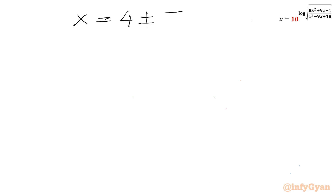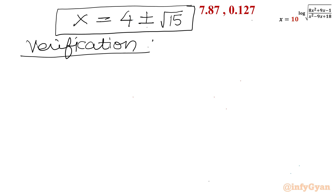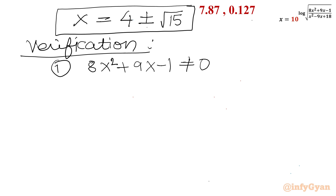The solutions to verify are x = 4 ± √15. Condition 1: the numerator 8x² + 9x − 1 should not equal zero. Solving it gives x ≈ 0.1 and x ≈ −1.22, neither of which matches 4 ± √15. So this condition is satisfied.